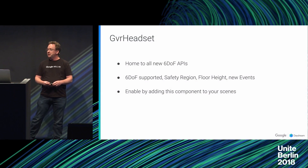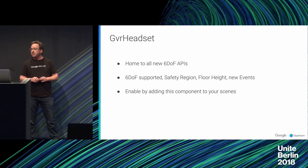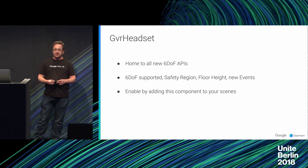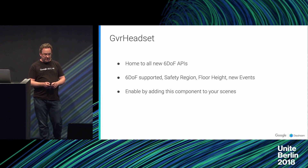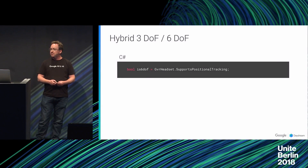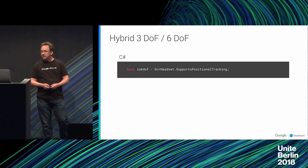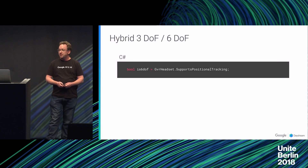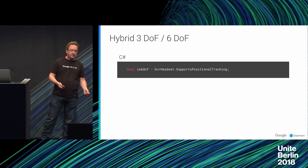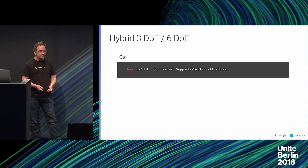The GVR Unity SDK has the GVR headset component as the main API surface for all 6DOF methods. Add this component to a game object in your scene to enable these new features. For apps that support both 3DOF and 6DOF, the GVR headset API provides a simple property for determining if the current device supports positional tracking, should your game need to adjust its interaction logic.